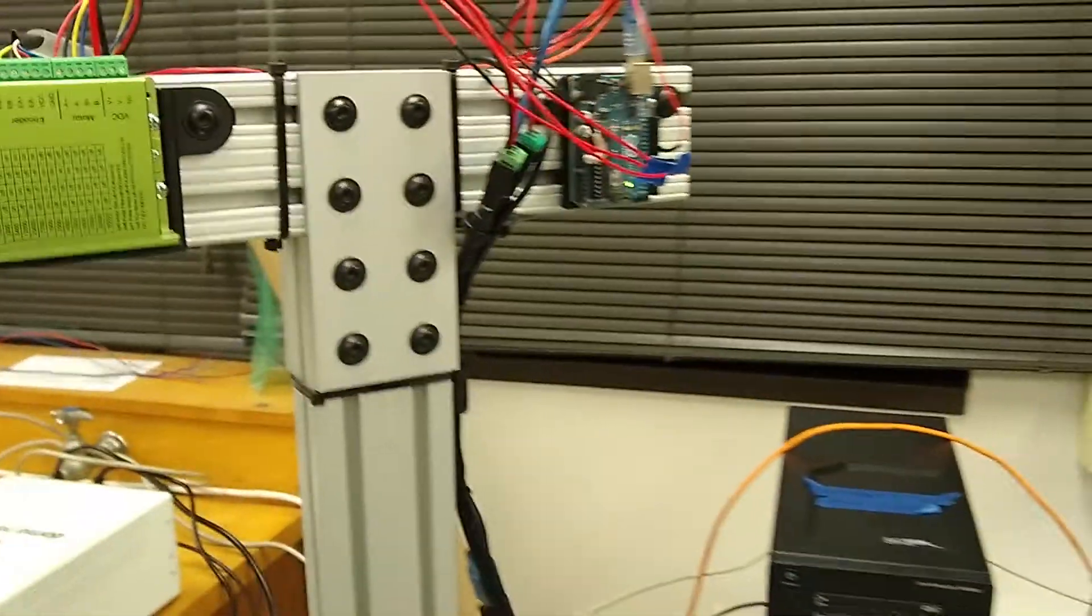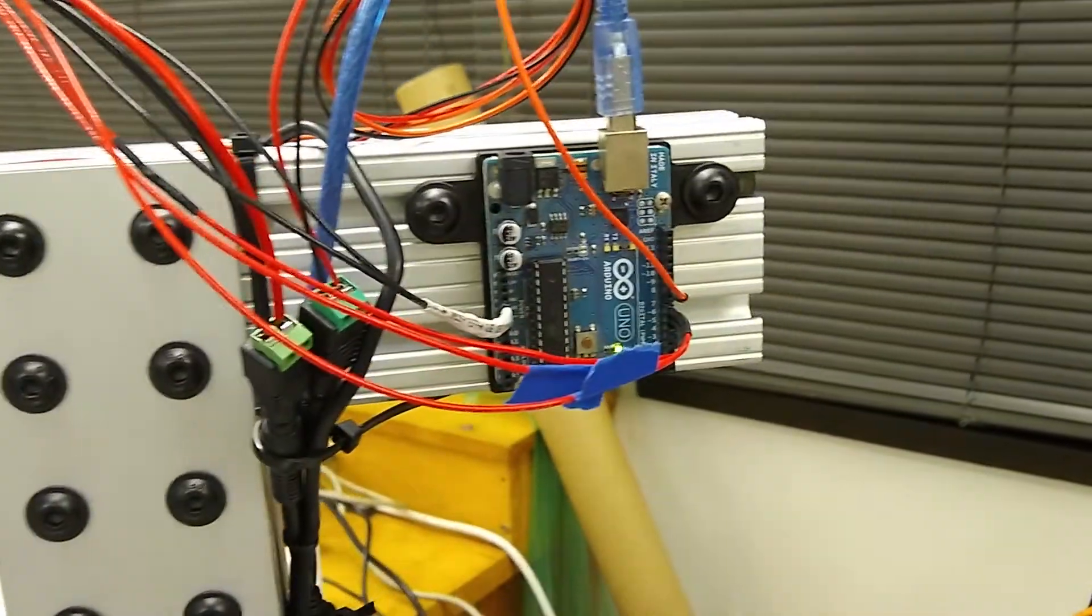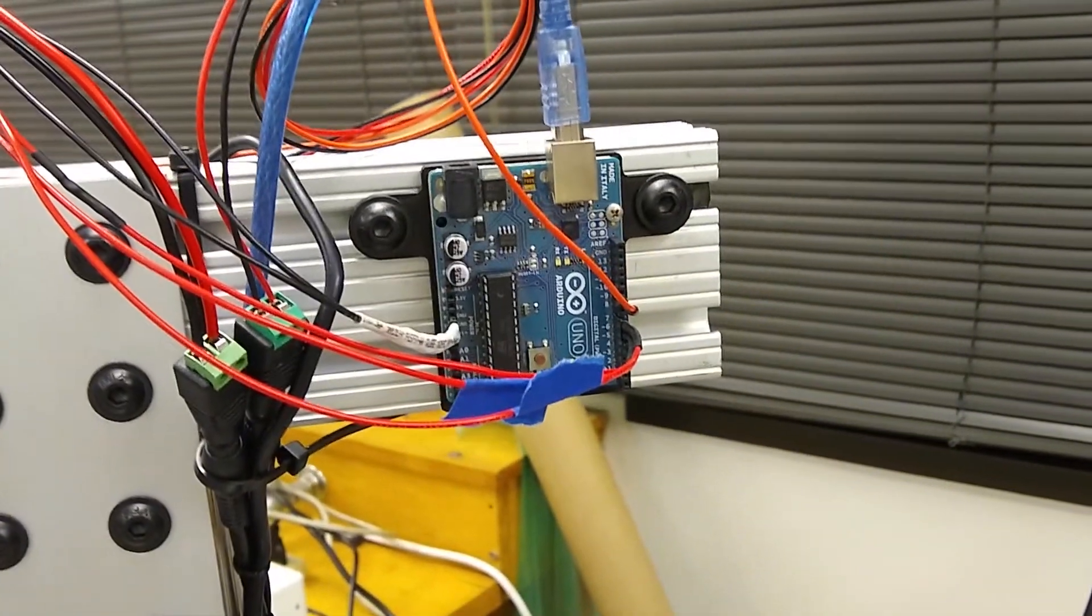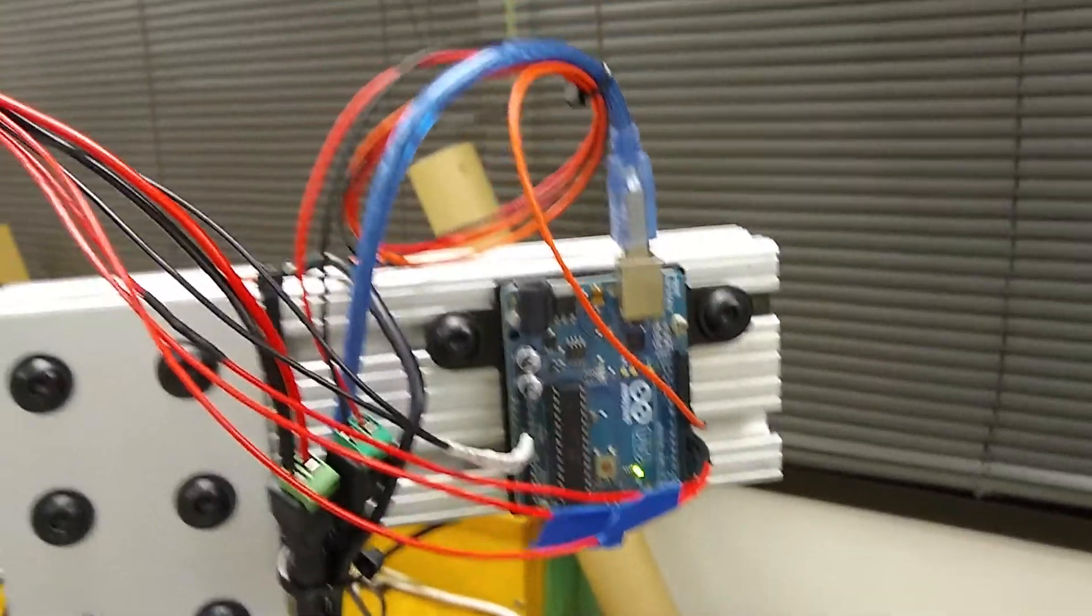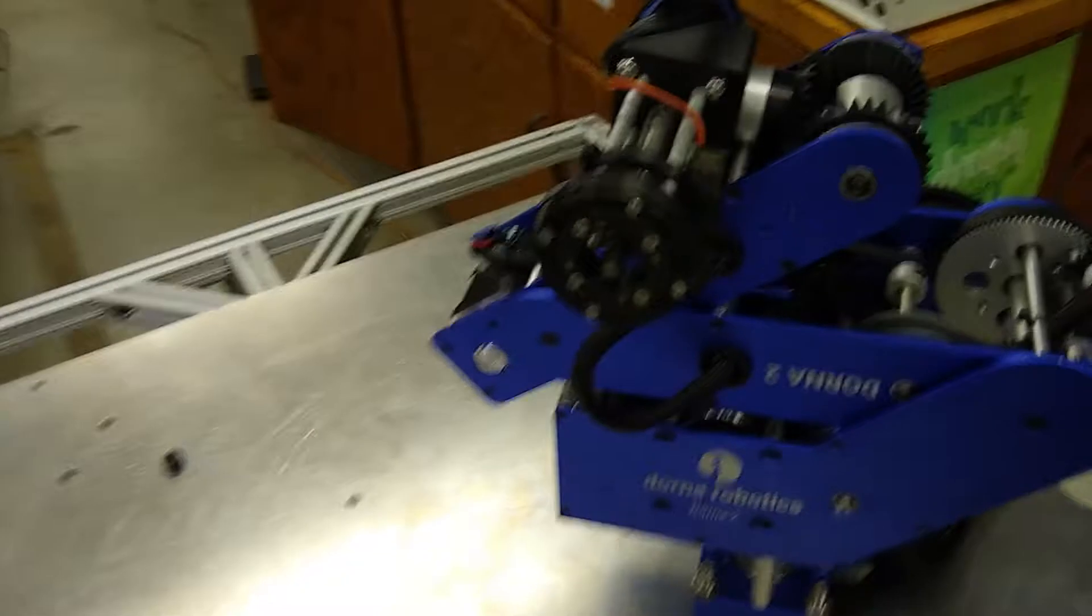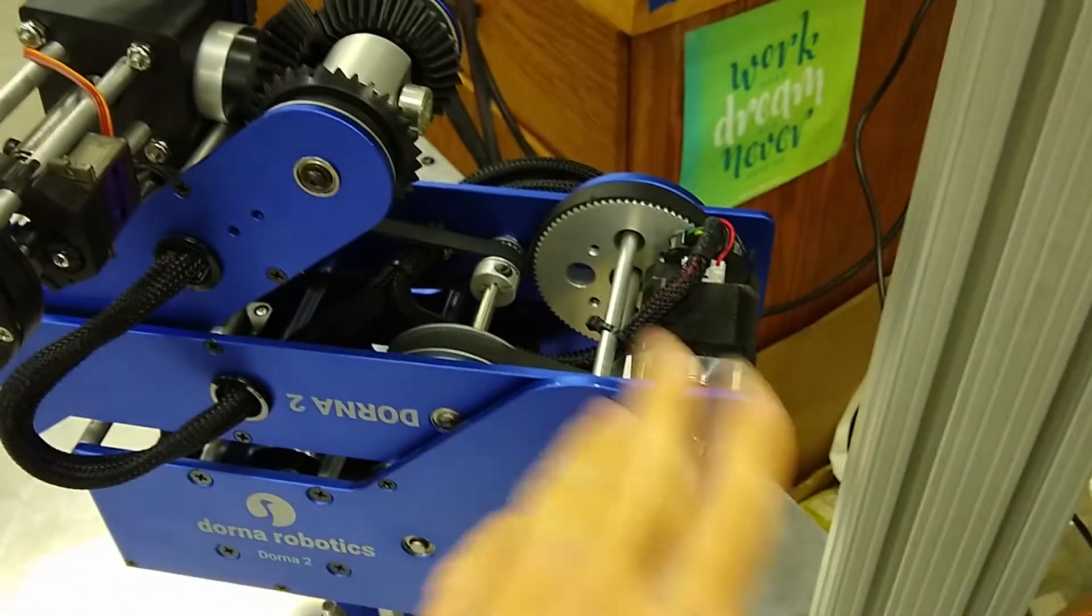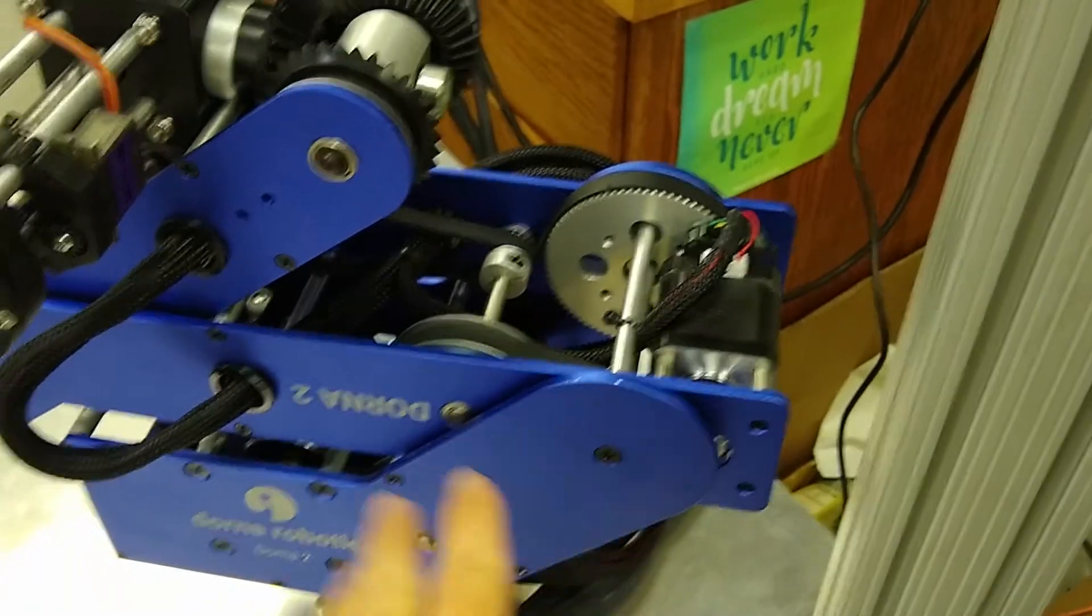The servo is controlled using ROS, and ROS using the ROS Serial library talks to the Arduino. The Arduino commands the servo and movement. The Dorna API commands using Python, and the Dorna API commands the robot's movement.